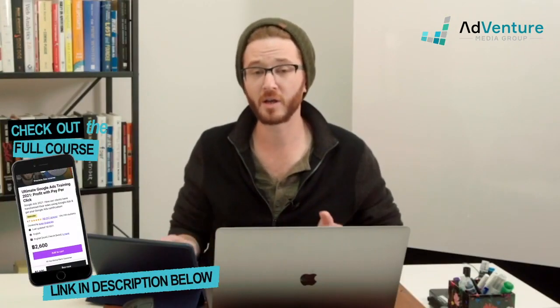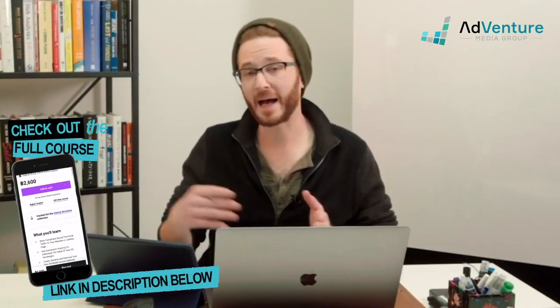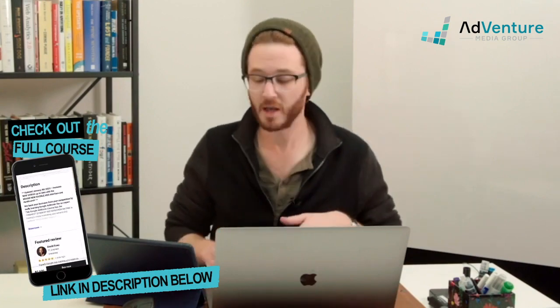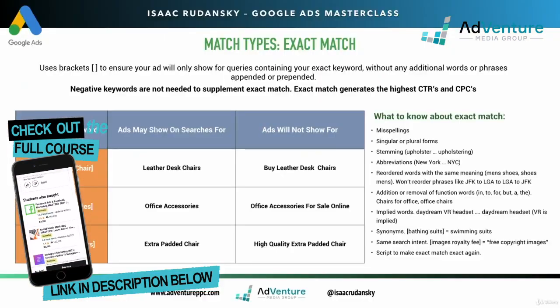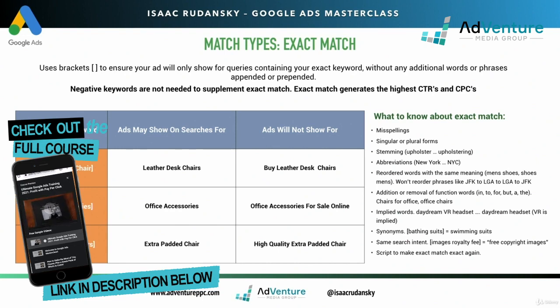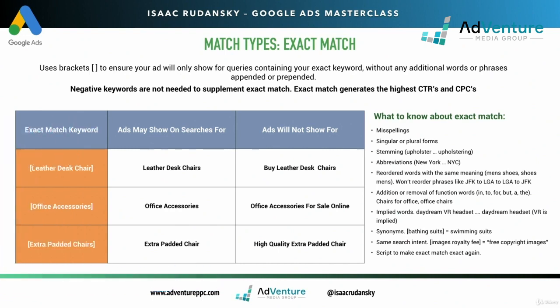In this lecture, we're going to be talking about exact match match type, which is the final form of positive match types we're going to be discussing in more detail. Exact match uses brackets — regular brackets enclosed around your keyword — to ensure your ad will only show up for queries containing your exact keyword without any additional words or phrases appended or prepended.